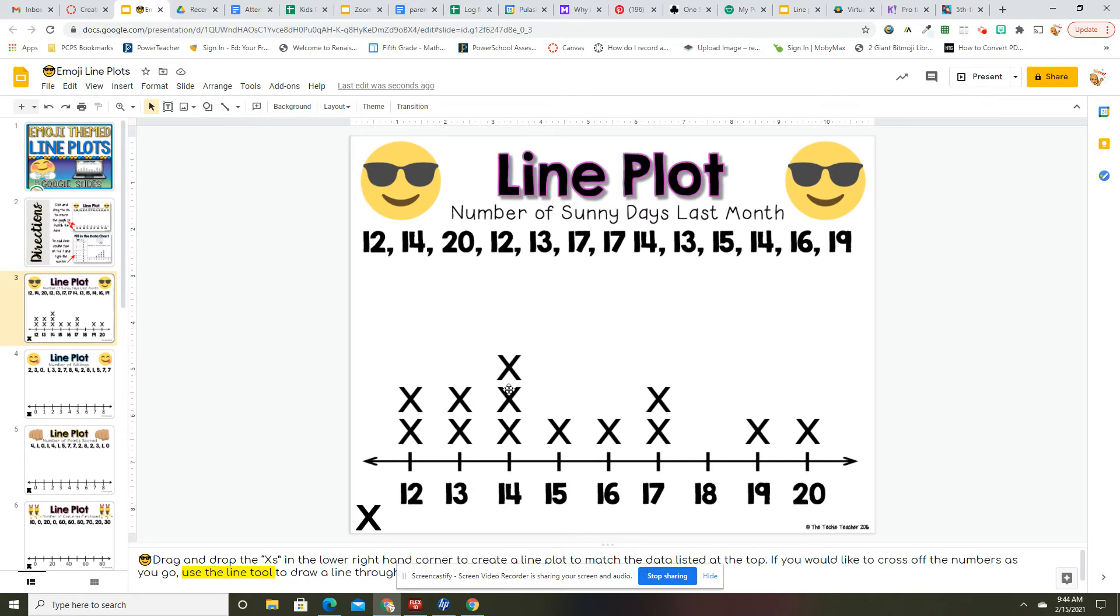And then count your X's, 1, 2, 3, 4, 5, 6, 7, 8, 9, 10, 11, 12, 13. So I probably have all the numbers correct. You can look at this quickly and see that your mode is 14. That is the number that appears the most. You can take 20 minus 12 and quickly get the range with a line plot. And that is how many sunny days there were.